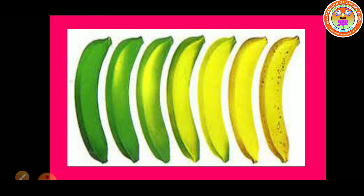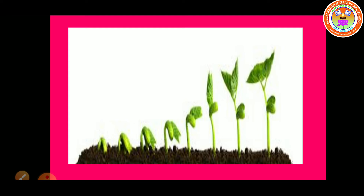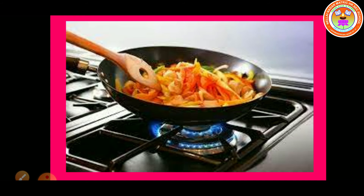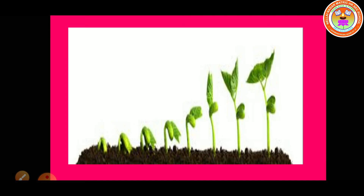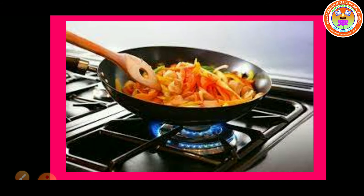For example, ripening of fruit, growth of plants, cooking of food. These are the examples of desirable changes, because these changes are useful to us and not harmful to our environment. So, these changes are called desirable changes.